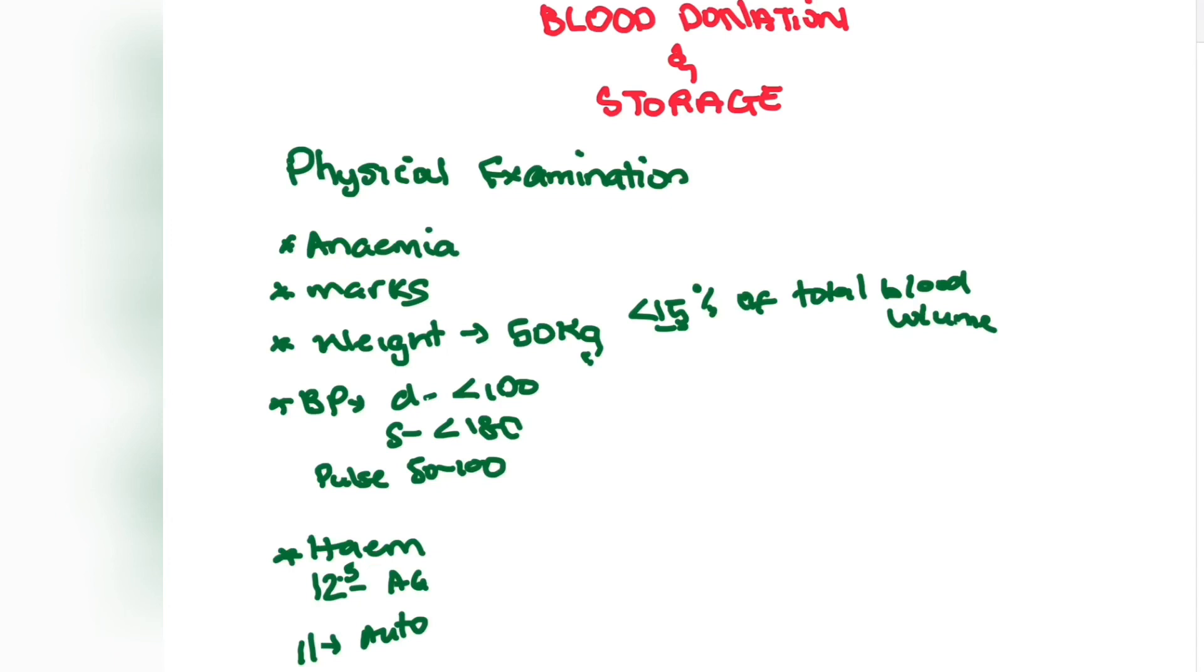Next is the physical examination after the history was taken. You're going to look for anemia by checking the mucosa. You're going to look for things like jaundice. You're going to look for markings on the patient suggesting there has been drug use. Weight: you need to check the weight to ensure they're at least 50 kg, and if they're donating blood, the volume of blood that they're donating should not be more than 15% of their total blood volume. You're going to check blood pressure, so the diastolic shouldn't be greater than 100 and the systolic shouldn't be greater than 180. You're going to check the pulse to ensure that it's normal between 50 and 100. You're going to check to see that their hemoglobin content is at least 12.5 grams per deciliter for allogenic donation and 11 for autologous donation.